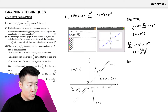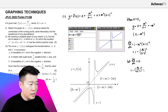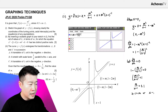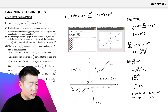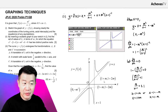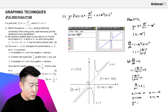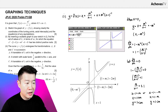Setting dy/dx = 0 gives 1 − m²/(x − 1)² = 0, so m²/(x − 1)² = 1, meaning m/(x − 1) = ±1. Therefore x − 1 = m or x − 1 = −m, giving x = 1 + m or x = 1 − m. Substituting these back into f(x) gives y-coordinates 1 + 2m and 1 − 2m respectively, yielding the coordinates of the two stationary points.